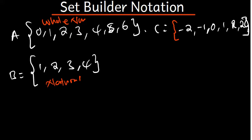Now, how do we represent this using set builder notation? It is straightforward. We are starting from zero — zero is included in this set — all the way to six.